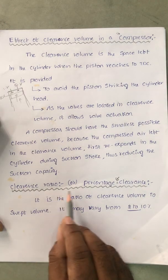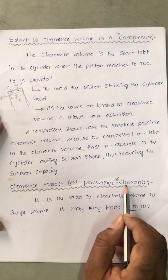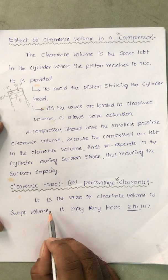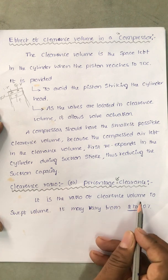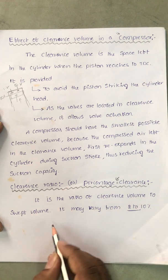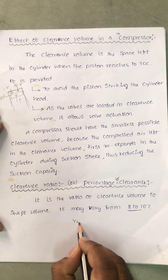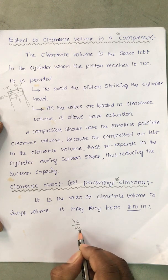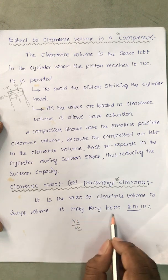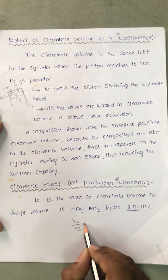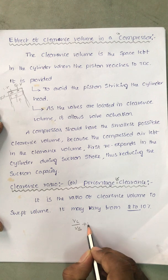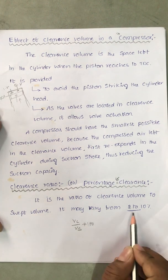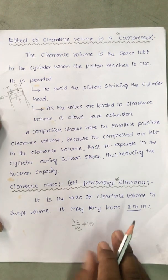The clearance ratio — also called percentage of clearance or clearance percentage — is the ratio of clearance volume to swept volume, that means Vc divided by Vs. It may vary from 2 to 10%.